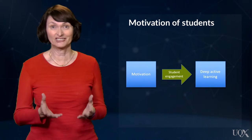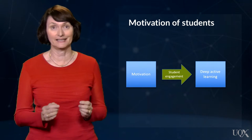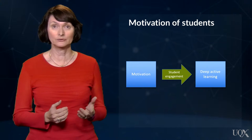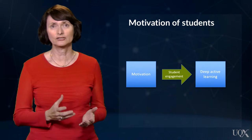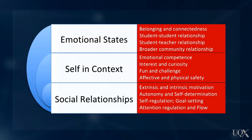First, we established that the essential ingredient that enables motivation to facilitate deep student learning is engagement, and that a complex range of social and cultural contexts, schooling experiences and educational beliefs influence the motivational state of students. With this in mind, the deep learning team developed a model to capture some of the key drivers for motivating students for deep learning, organised under three main components: emotional states, the self in context, and social relationships.